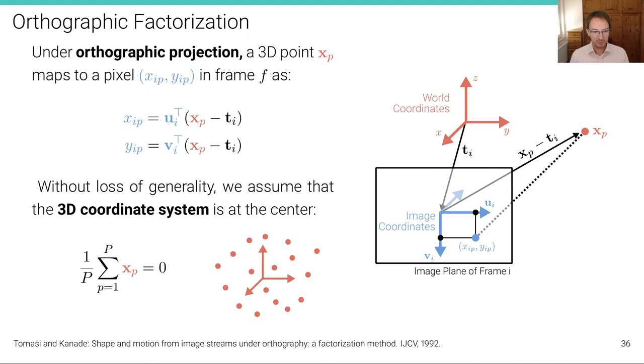Now, without loss of generality, we assume that the 3D coordinate system is at the center because there is an ambiguity here. We can always define the world coordinate system arbitrarily. So we need to define it somehow and we define it such that the 3D point cloud here is centered around this world coordinate system to remove that degree of freedom. This is an assumption that we do.